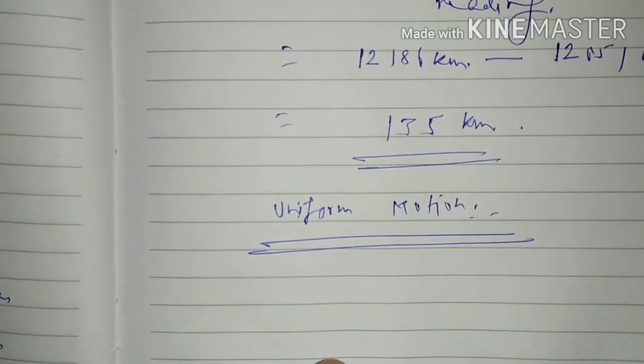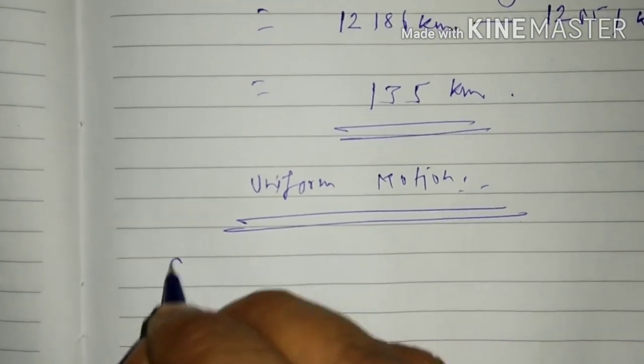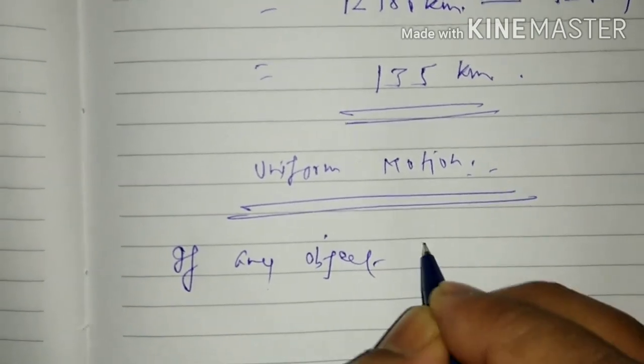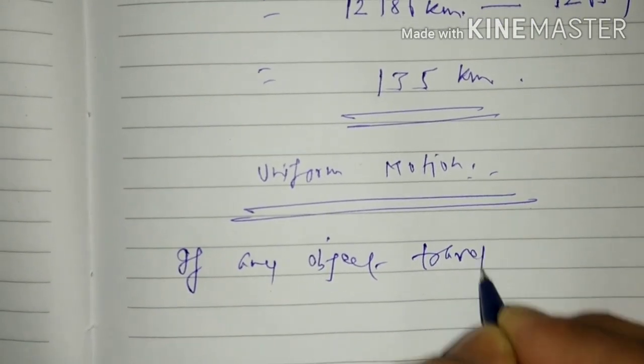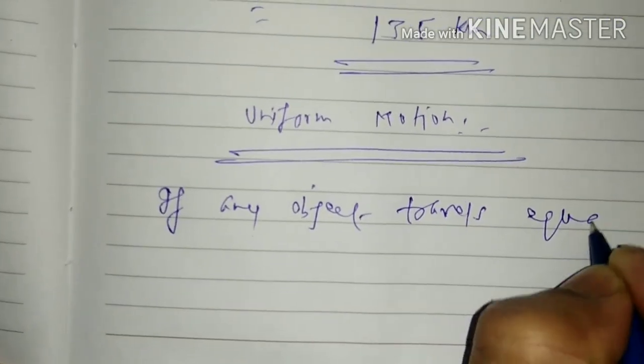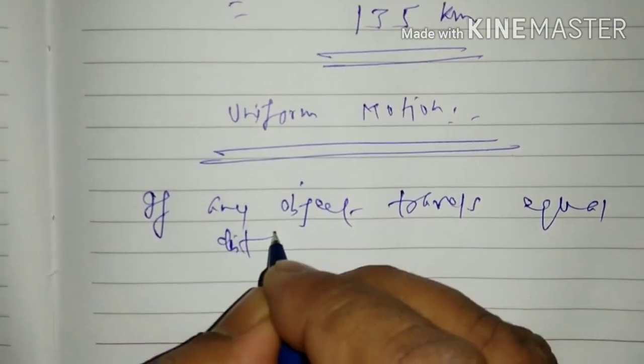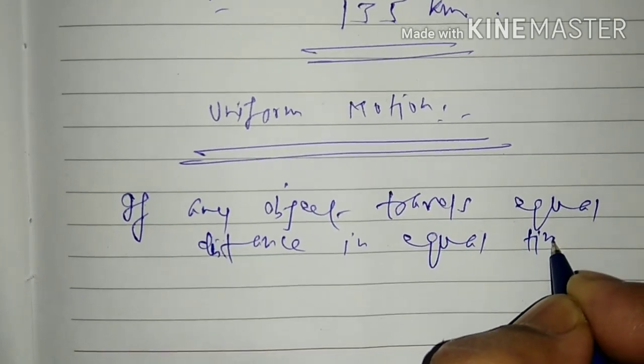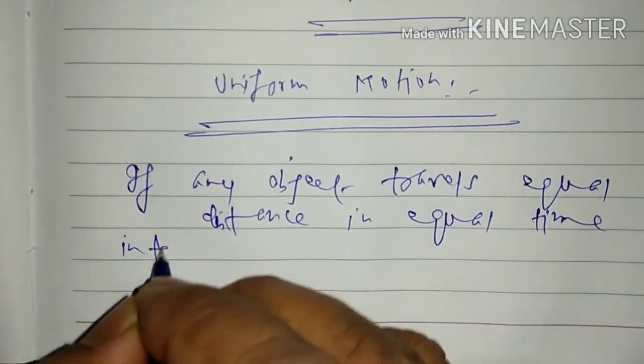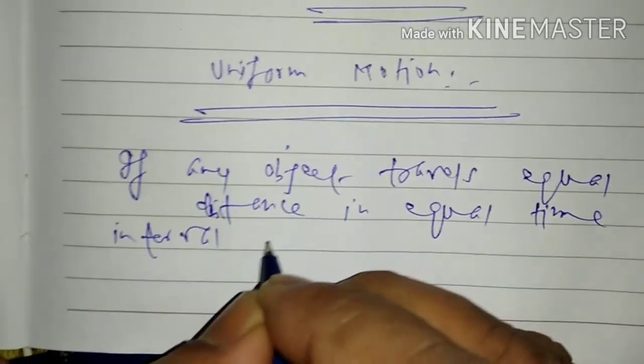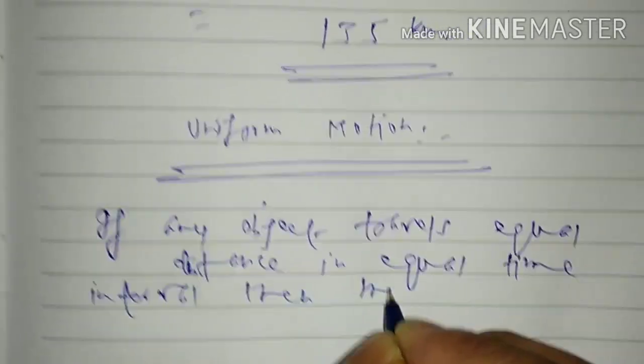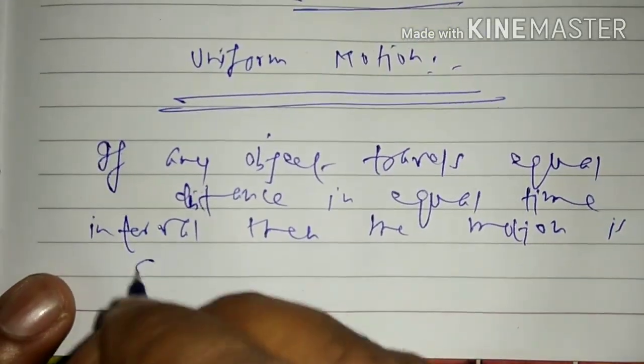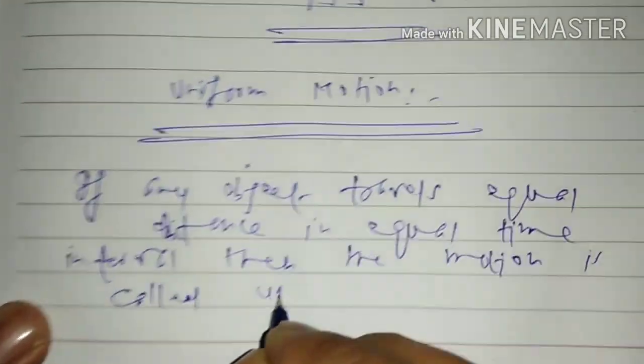So first of all, see uniform motion. What do you mean by uniform motion? If any object travels equal distance in equal time intervals, then the motion is called uniform.